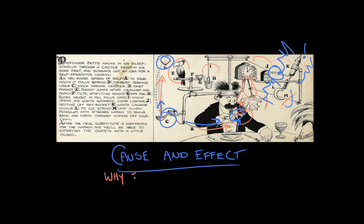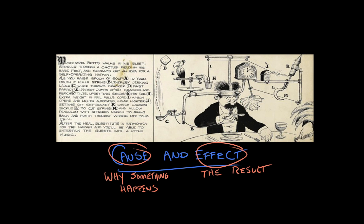A cause is why something happens, and an effect is the result. So for this machine, the cigar lighter lights a fuse which sets off the rocket, which has a sickle — a kind of knife connected to it — which cuts this string. So why did the rocket take off? Well, the cigar lighter lit the fuse. That's the thing that caused it. What was the effect of the fuse being lit? The rocket takes off. But the rocket taking off is its own cause that causes an additional effect, which is cutting the string.